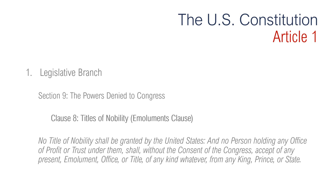Section 9, Clause 8 is about the titles of nobility — also recently referred to as the emoluments clause. It says no title of nobility shall be granted by the United States, and no person holding any office of profit or trust under them shall, without the consent of Congress, accept any present, emolument, office or title of any kind whatever from any king, prince, or foreign state. This means no person in the United States may hold a title of nobility such as duke or duchess. This clause also discourages bribery of American officials by foreign governments by disallowing government officials to profit from foreign governments, even if it's private citizens from foreign governments.